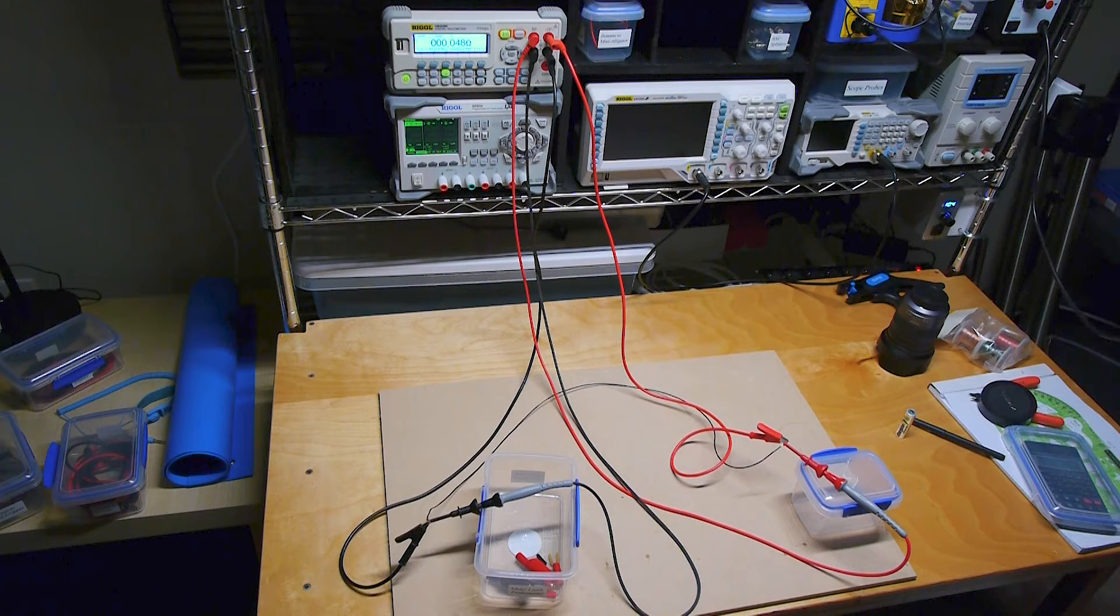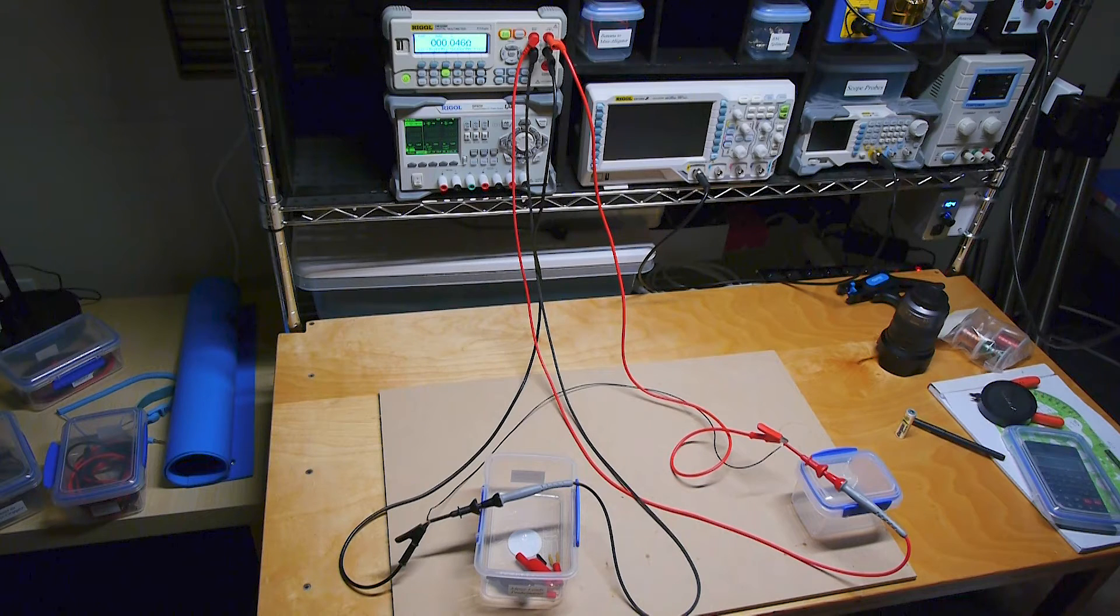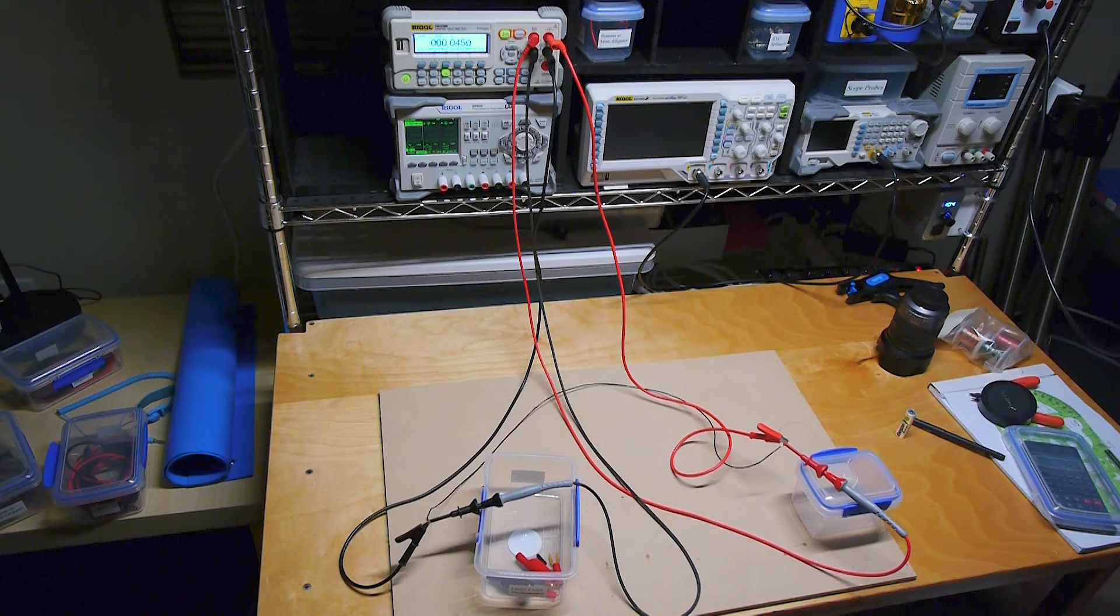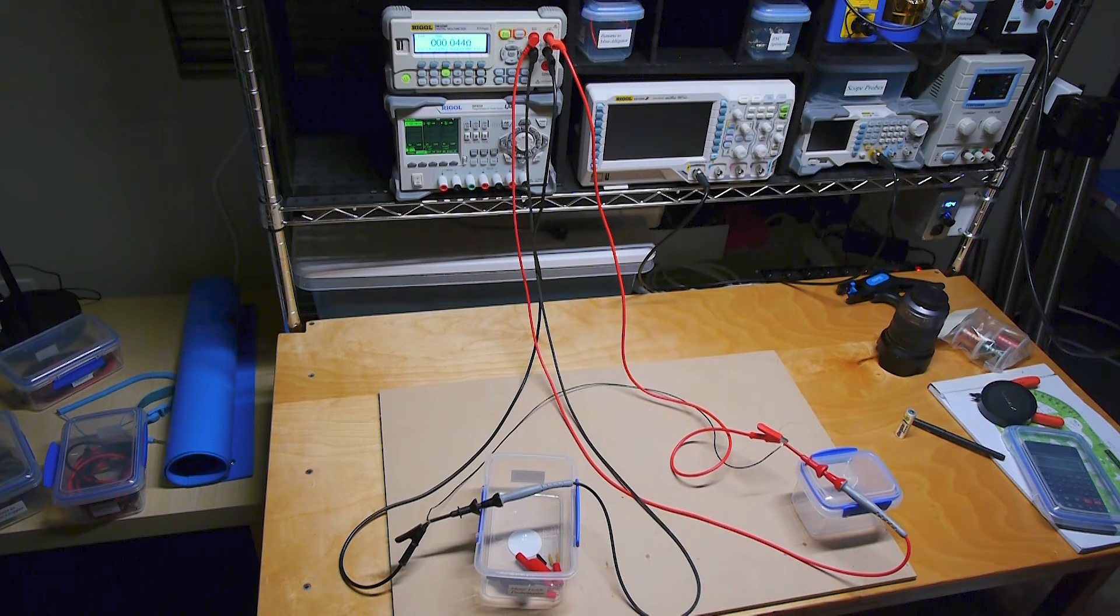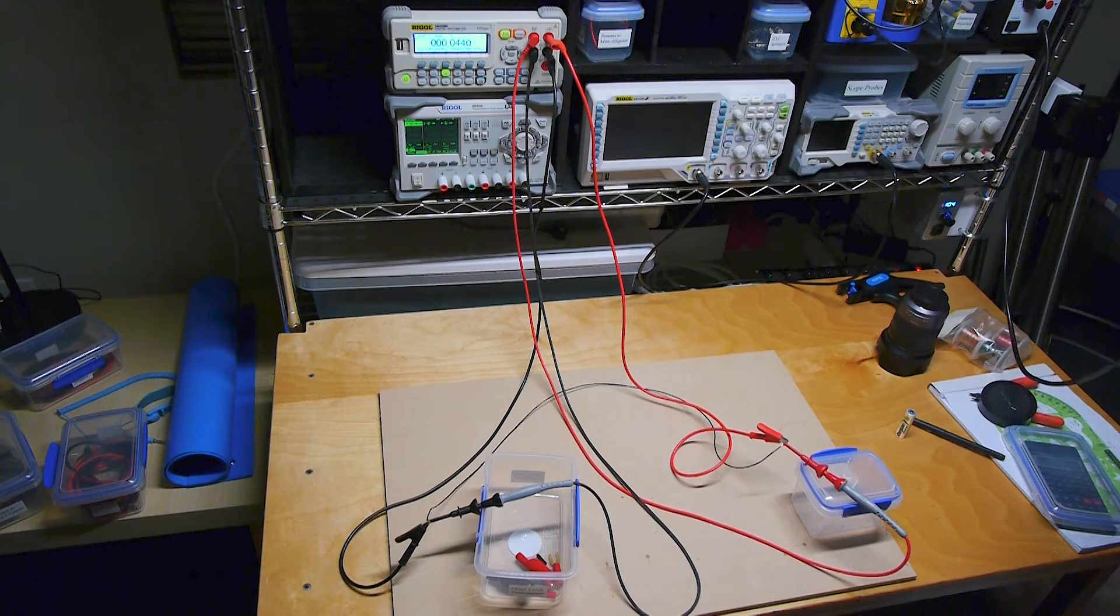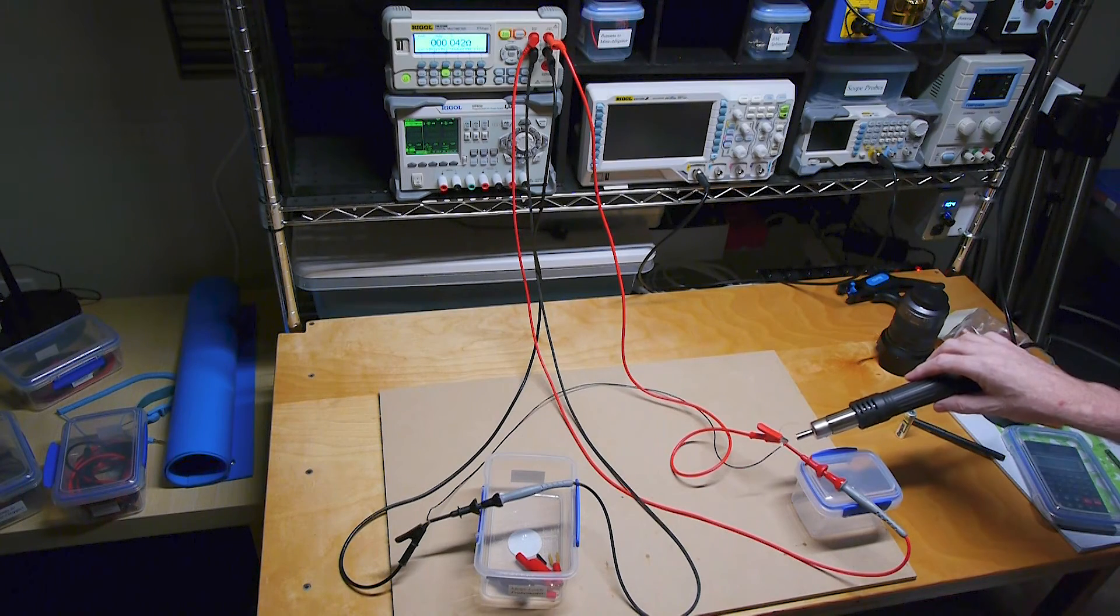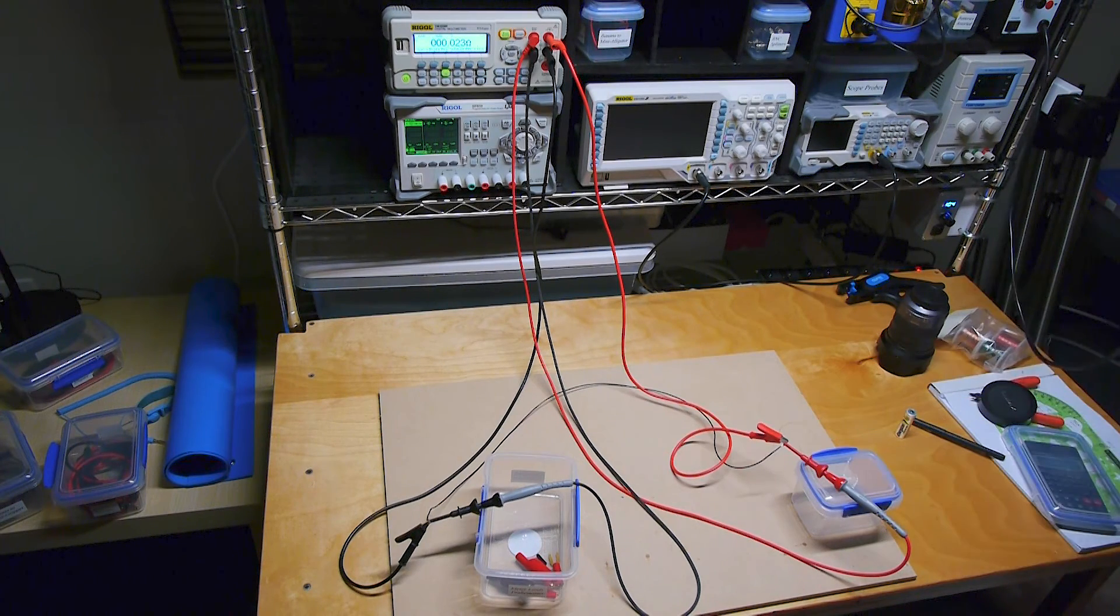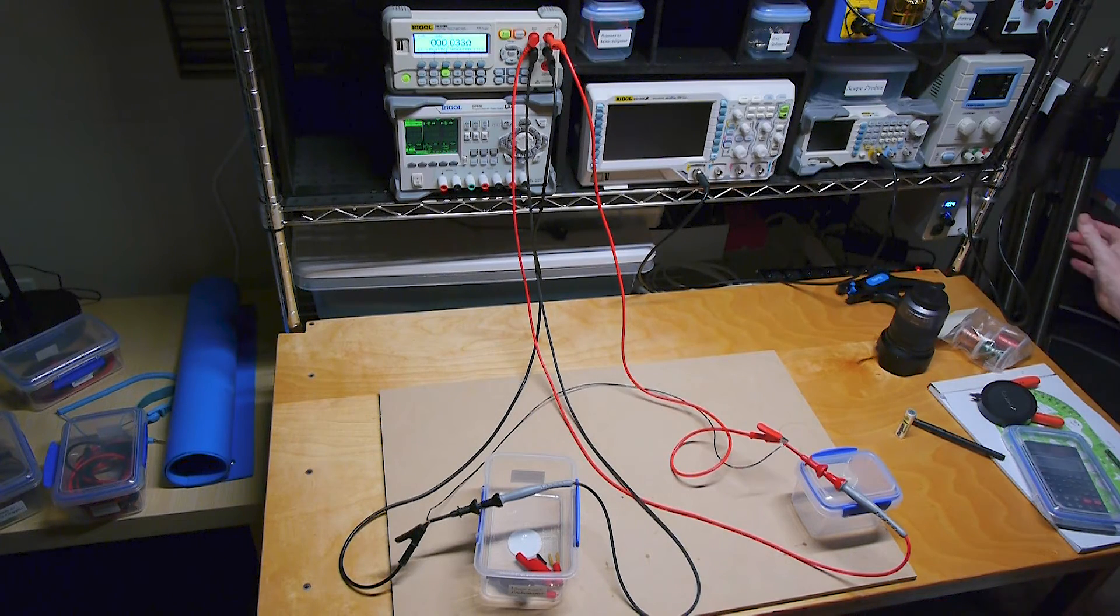So heat the negative side and the resistance goes up, just as with my hand. Heat the positive side and the resistance goes down, just as with my hand. The only difference being the amount of change was much greater with the hot air gun. Obviously, the temperature difference is much greater. So heat the hot side, it gets lower resistance.